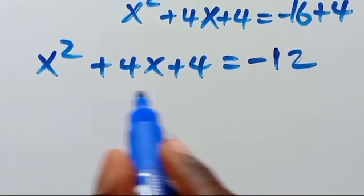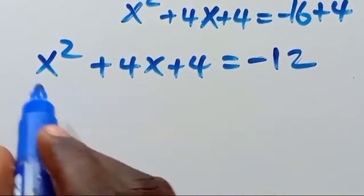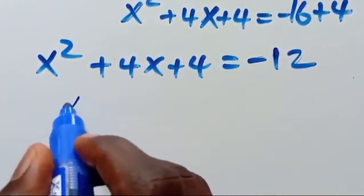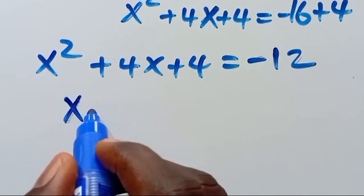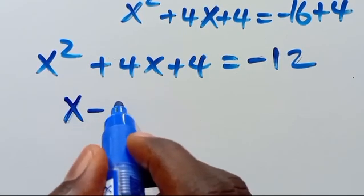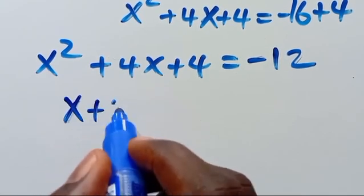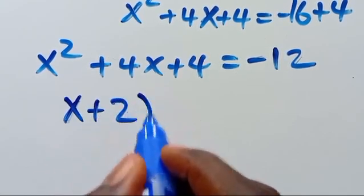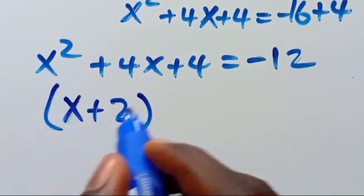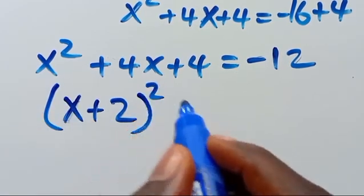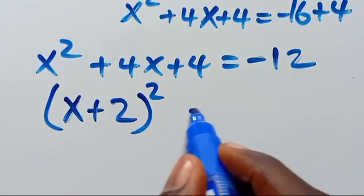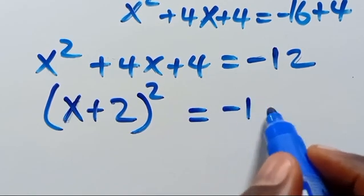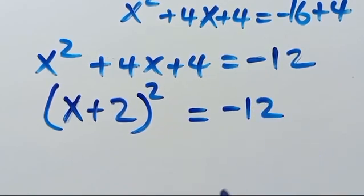So (x plus 2) squared equals negative 12.